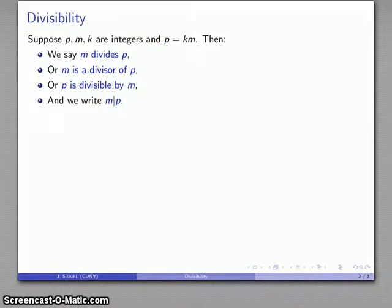Now, since multiplication among the integers is commutative, whatever I can say about M, I can also say about K. I could say K divides P, K is a divisor, P is divisible by K, K divides P. All of these things are equally true about K and of M.